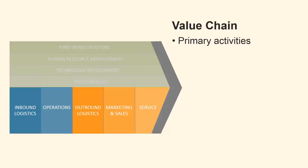The primary activities consist of the five activities at the bottom of the model. These are inbound logistics, operations, outbound logistics, marketing and sales, and service. Each of these activities may be described as follows.